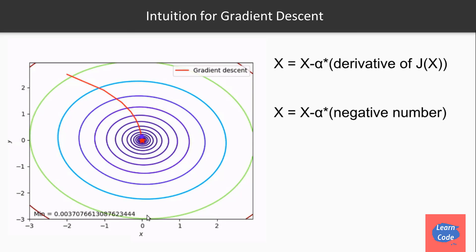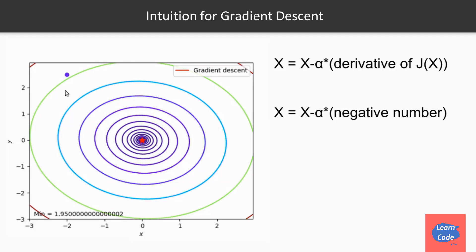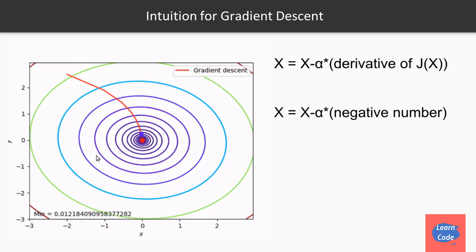If we had two variables instead of one, let's say x and y, and the cost was given by z, we could represent this with the help of a contour plot, which is a plot in the form of a cross section of a 3D plot. Each of these circles represents a curve on the 3D plot. You can imagine this as a bowl and the contour plot as a cross section. Since the circles become more constricted towards the center point, the depth of the bowl increases towards that point. We move from one point to another by taking the slope on the x axis as well as the y axis individually.